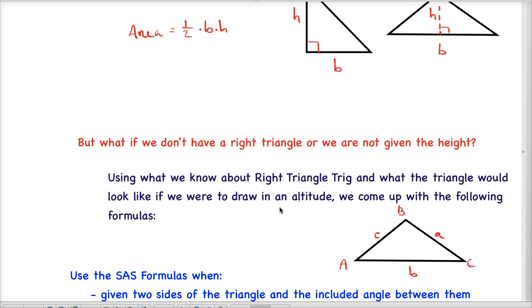If we were to draw in an altitude in this triangle here, this is one of our regular oblique triangles that we've been talking about. We use a, b, and c as the vertices and then lowercase a, b, and c to represent the sides.